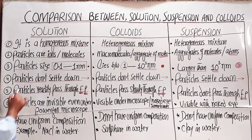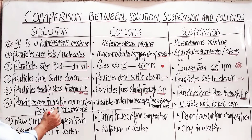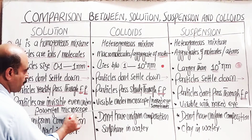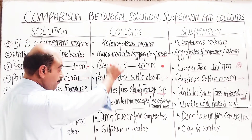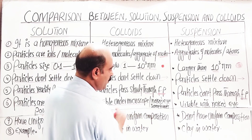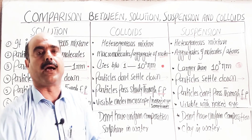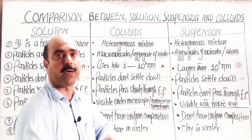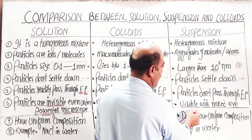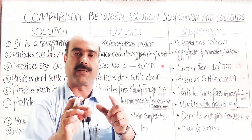Point number six: in solution, the particles are invisible even under a powerful microscope. In colloids, the particles are visible under a powerful microscope, or sometimes with the naked eye. In suspension, the particles are visible through the naked eye.